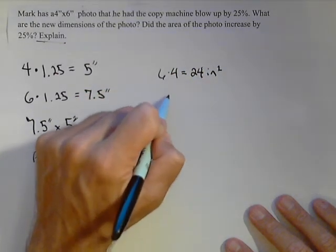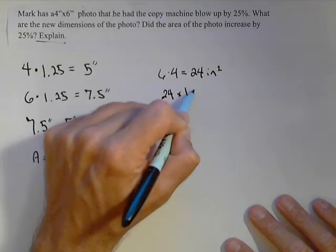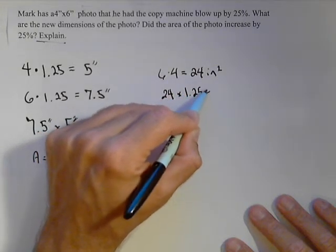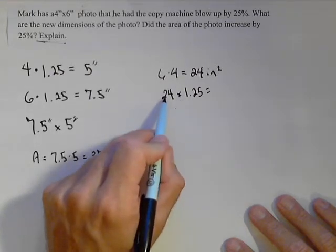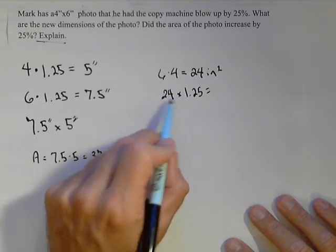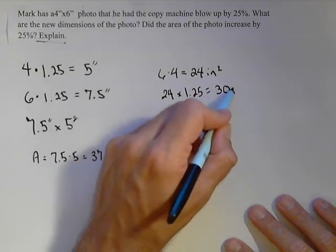Now, if we were increasing 24 by 25%, times our 1.25, we'd find what we would get is 125%. Well, 100% is 24, 25% is 6, so we would get 30 square inches.